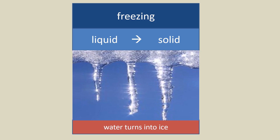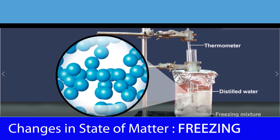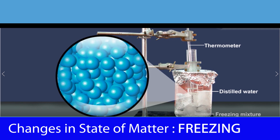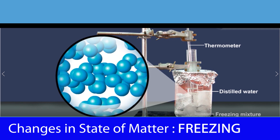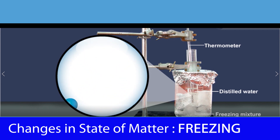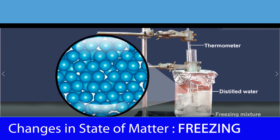Next, let's learn about freezing. During freezing, liquid turns into solid. For example, water turns into ice. When liquid releases heat energy in the cold, particles lose energy, move slower, and come closer together. The particles start to vibrate at a fixed position. When they reach the freezing point, water turns into ice and liquid turns into solid.